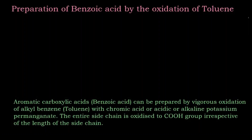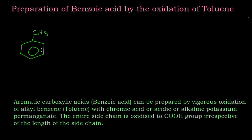Hi everyone. In this video we are going to learn the preparation of benzoic acid by the oxidation of toluene. Let's write the reaction. This is toluene — the phenyl group with CH3 attached. Toluene is oxidized, meaning three oxygen atoms are going to react with this toluene in the presence of a strong oxidizing agent.